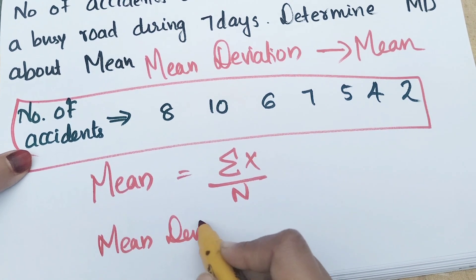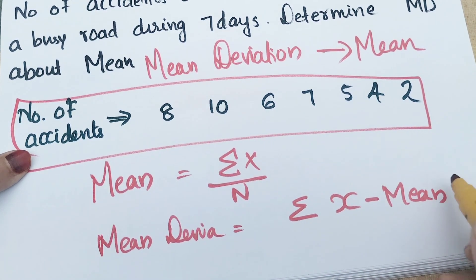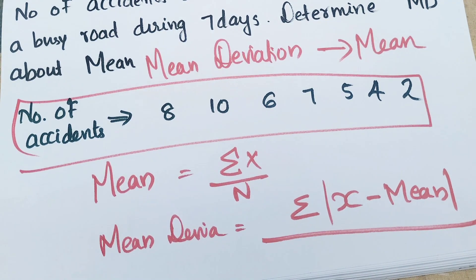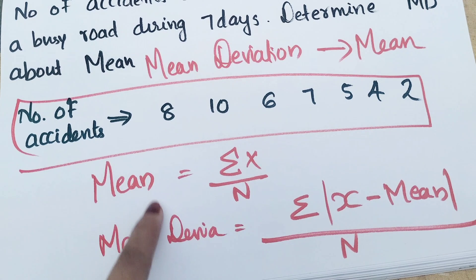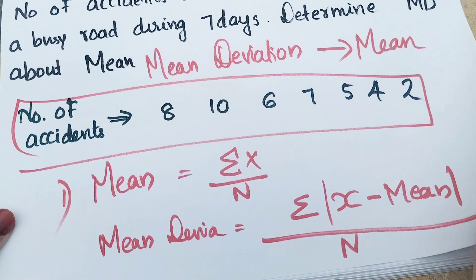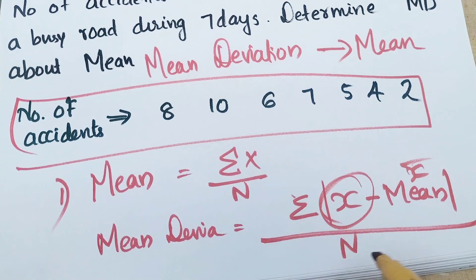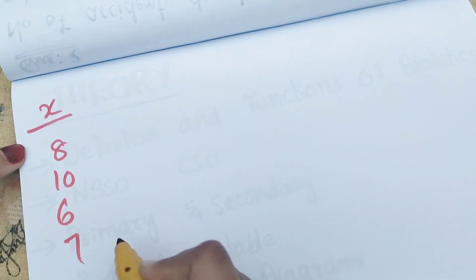Mean deviation is equal to sigma of absolute value of (x minus mean) divided by n. We take the absolute value — that means we don't consider positive or negative signs. The first step is to calculate the mean, that is sigma x divided by n. The x values are: 8, 10, 6, 7, 5, 4, 2.